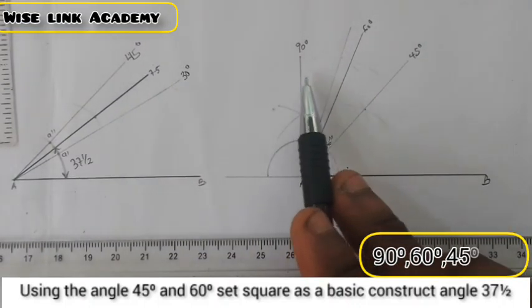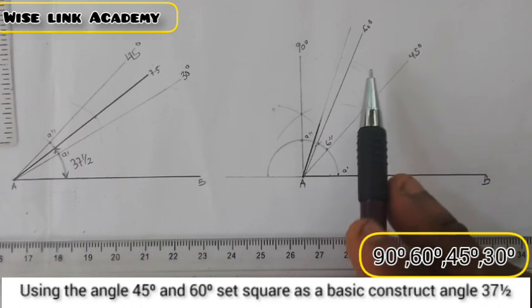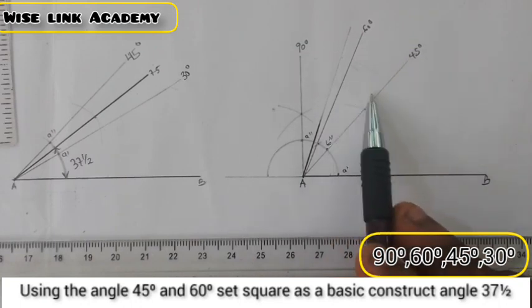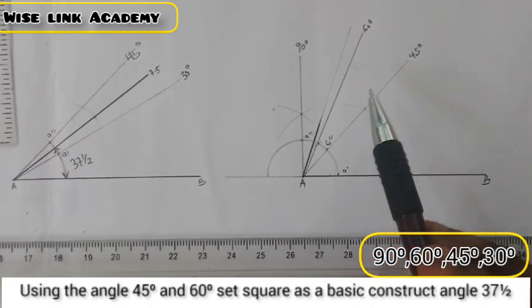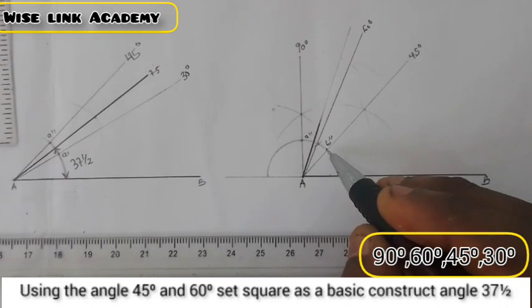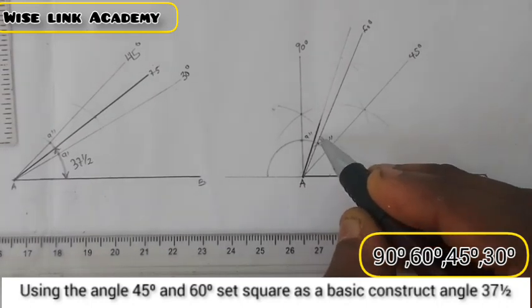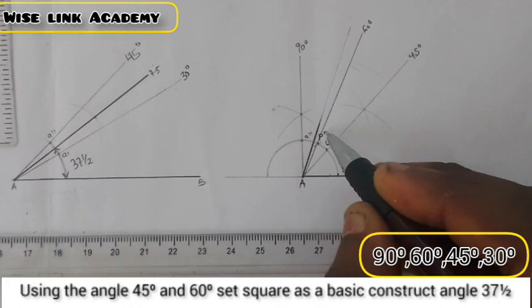This is what we want. We want 90, 60 and 45. Now we said in between these two, the distance between them is 15. If I divide 15 by 2, I get 7.5. I will call this, since here is B prime, here becomes B double prime.